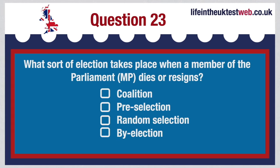What sort of election takes place when a member of Parliament (MP) dies or resigns? Coalition, pre-selection, random selection or by-election? The correct answer is: If an MP dies or resigns, there will be a fresh election, called a by-election, in his or her constituency.